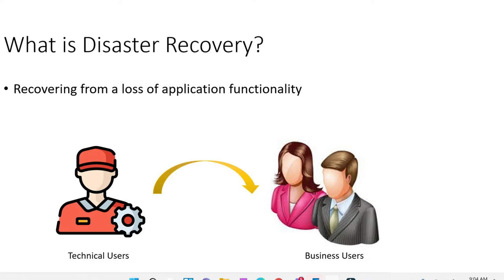When an application is super critical, we have to plan very carefully how disaster recovery would happen — how we would have replicas, backups, or a similar setup in some other geography. So if one machine or server goes down, we can switch to the other one. Every application we design, we also plan for disaster recovery. It is an agreement between the technical users and the business users.